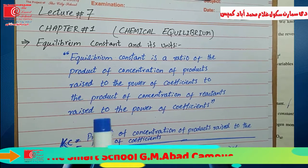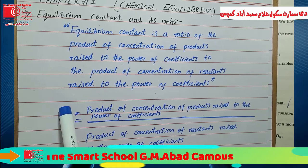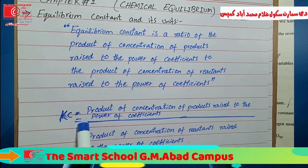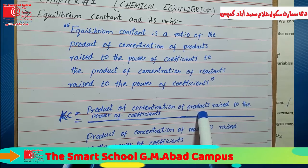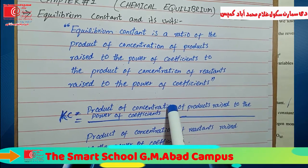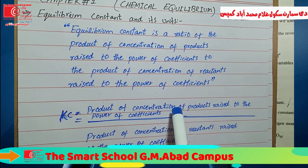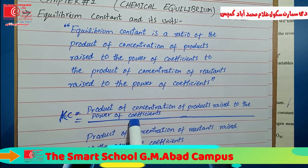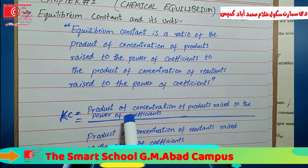If I show this formula: the equilibrium constant Kc equals the product of concentrations of products raised to the power of coefficients, placed in the numerator. The coefficients of the molecules are used as the powers — we covered this in the previous lecture.